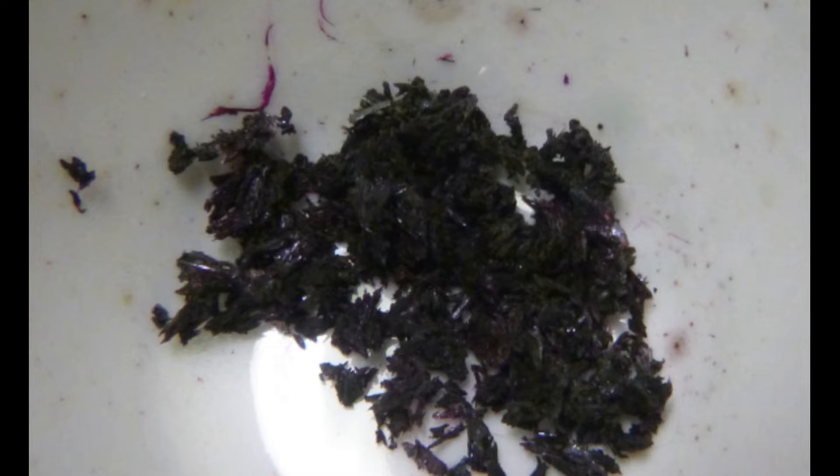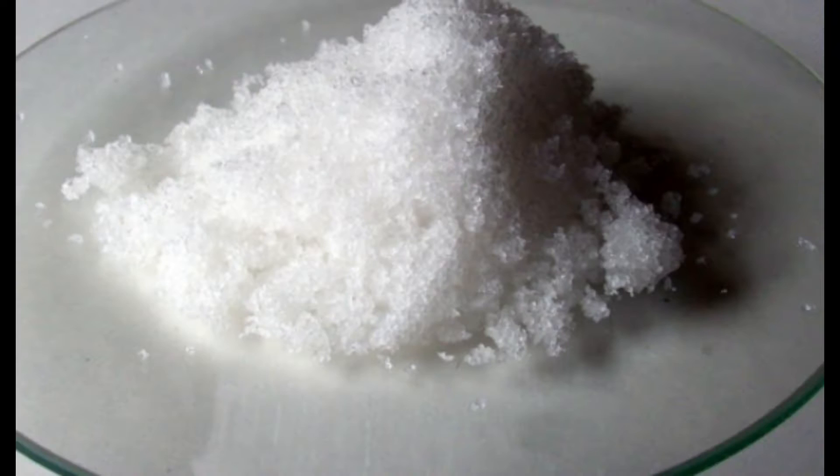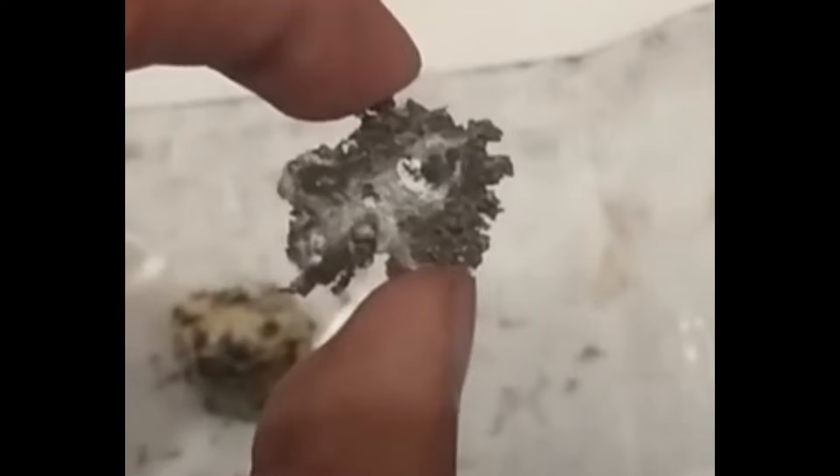But in this video, we're going to be making sodium permanganate, because it's basically the same thing as potassium permanganate, and I don't have potassium hydroxide. To start, we'll be using sodium hydroxide, sodium nitrate or another oxidizer like sodium chlorate, and manganese metal or manganese dioxide from battery pastes.